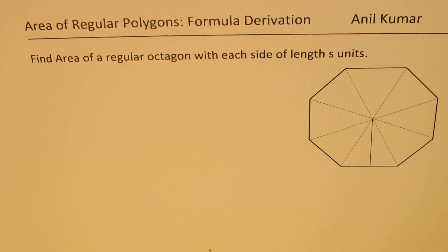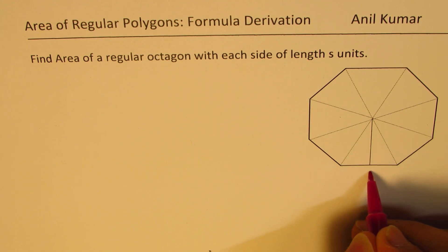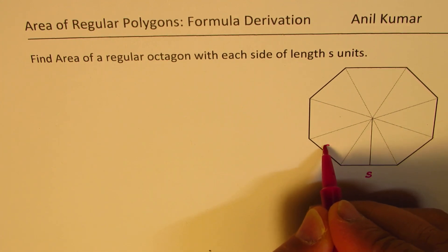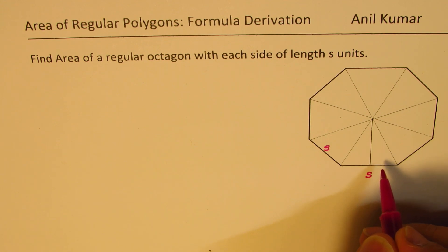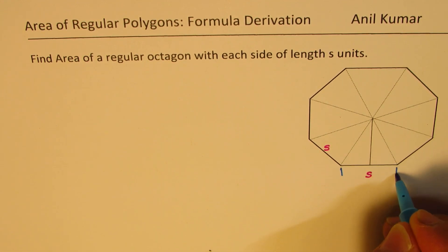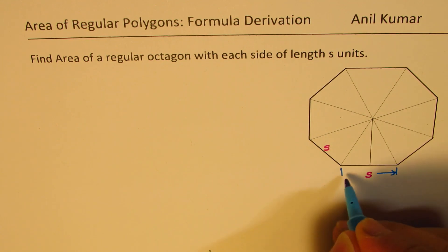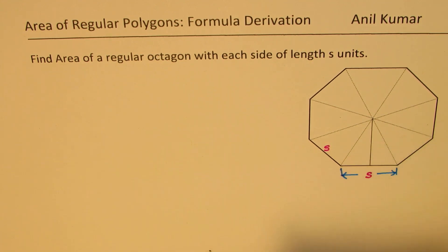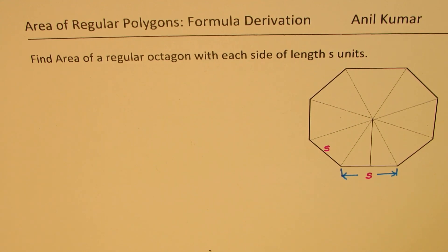In this case, we are given that each side is s units. So this is s, this is also s — each side is equal, it's a regular octagon, and the length is s. If you are given only a side length and not the apothem, how are you going to find the area of a regular octagon? That is what we are going to look into.